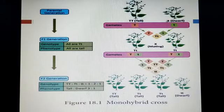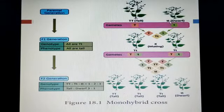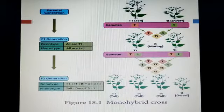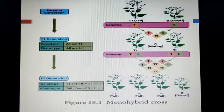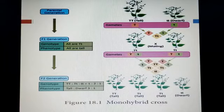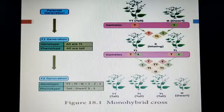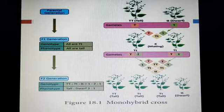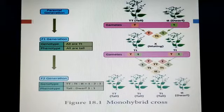Here you can see the monohybrid cross. Tall plants are pure variety — capital T, capital T — and dwarf is also pure — capital T, capital T (for dwarf: small t, small t). After crossing, you can see that the first offspring spring is tall. But the condition is heterozygous — one capital T and one small t. The characters will appear as dominant, but the recessive character's gene is still present.